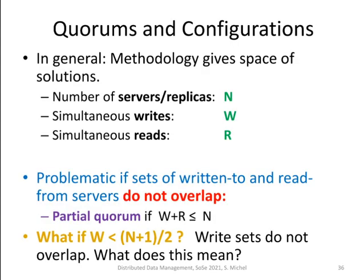In general, we do not have to use only these two extremes — N equals W with R equals 1, or N equals R with W equals 1 — for read- and write-optimized strong consistency. We can configure N, W, and R as we want. N is assumed to be set to a reasonable number, and W and R can then take on different values within the scope of N, leading to different configurations with different properties.